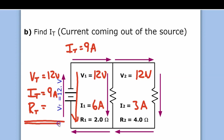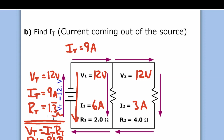Now we can use the simple equation to get RT. That's simple Ohm's law: VT equals IT times RT. So 12 volts equals 9 amps times RT. Dividing both sides by 9, RT equals 12 over 9, which is 1.3 repeating ohms. Notice that the total resistance is less than either of the two resistors — that always happens in parallel circuits.